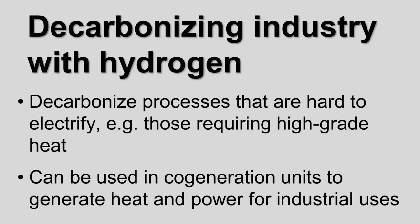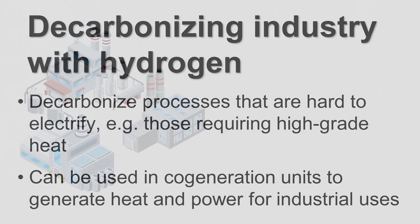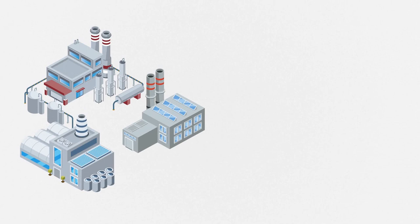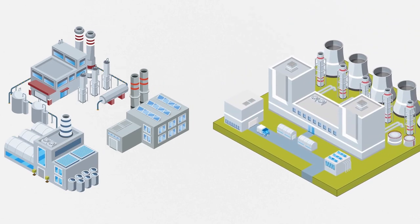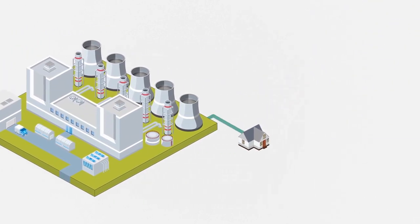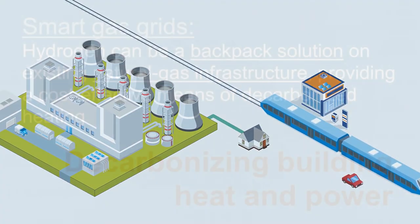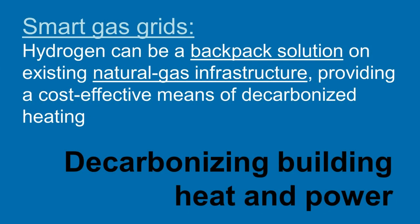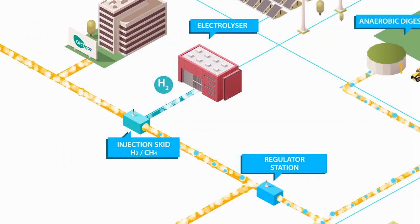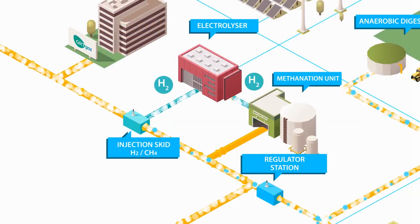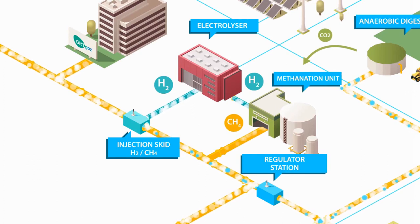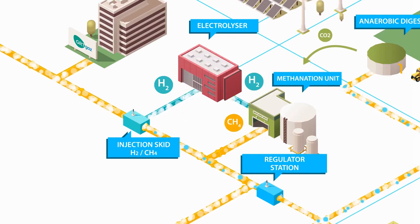Hydrogen also offers opportunities to decarbonize CO₂-intensive industry processes. For instance, it can help to decarbonize processes that are hard to electrify, in particular those requiring high-grade heat. It can also be used to generate heat and power for industrial uses. Additionally, hydrogen helps to decarbonize building heat and power — in regions with existing natural gas networks, hydrogen could piggyback on existing infrastructure and provide a cost-effective means of heating decarbonization.